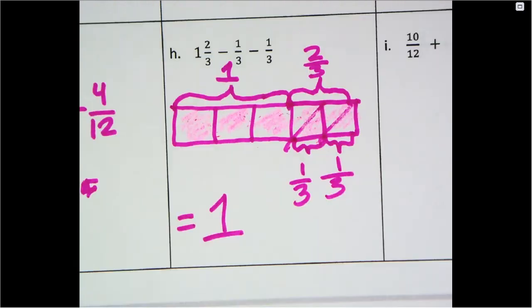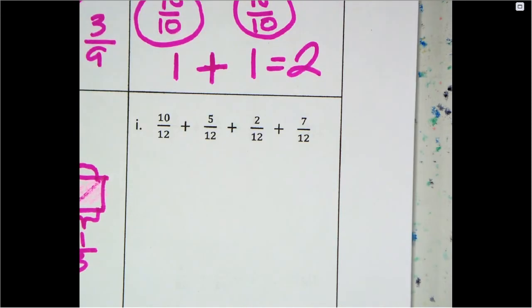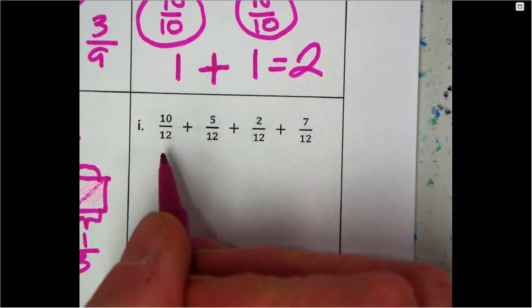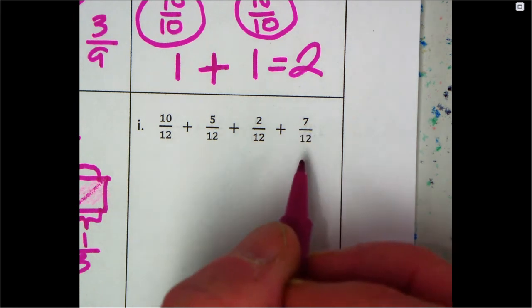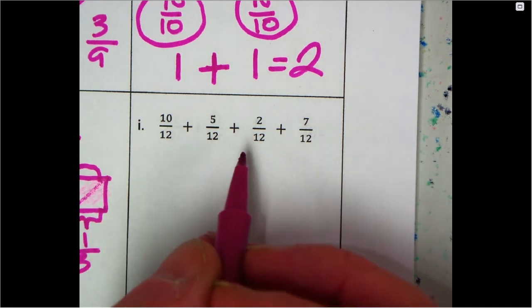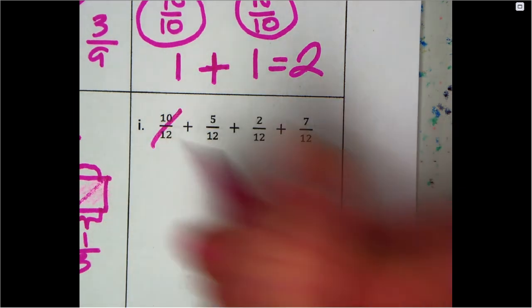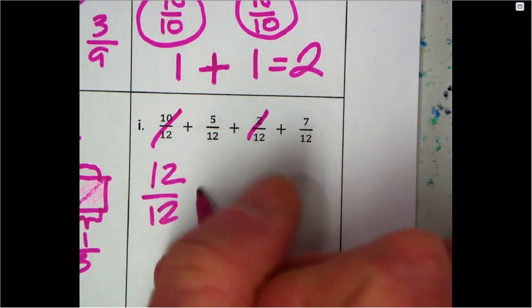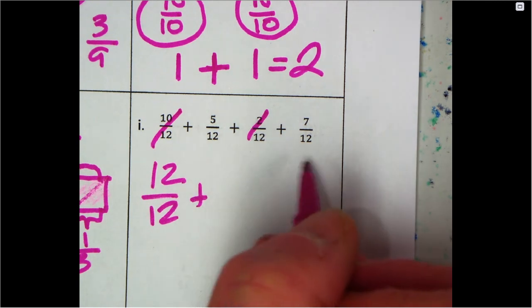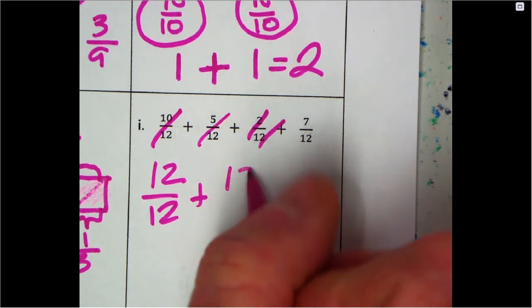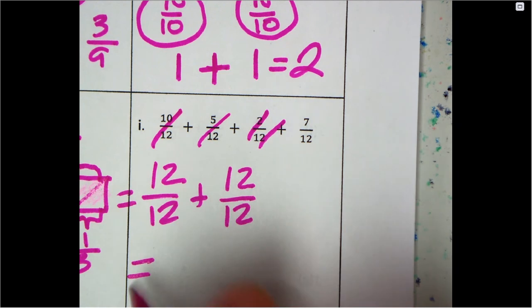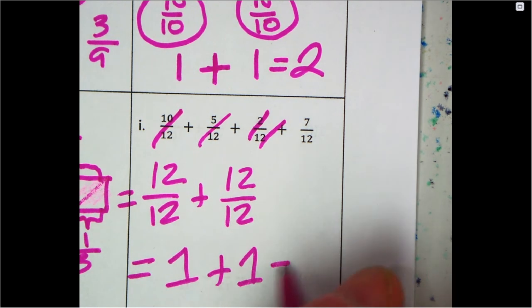We'll continue on. We have 10/12 + 5/12 + 2/12 + 7/12. Can I add any of these together to get 12? Yeah, I could do 10 + 2 is 12/12. 10/12 + 2/12 is 12/12. And look what I have left: 5/12 + 7/12. 5 + 7 is 12, so I have another 12/12. What does this equal? One whole plus one whole equals 2.